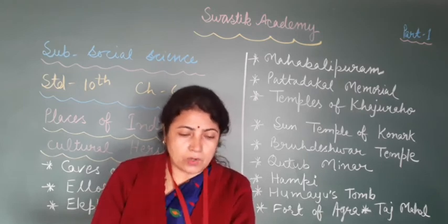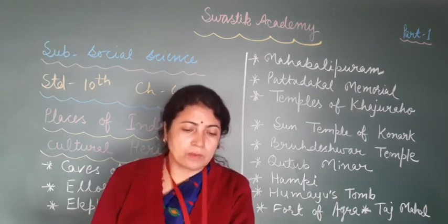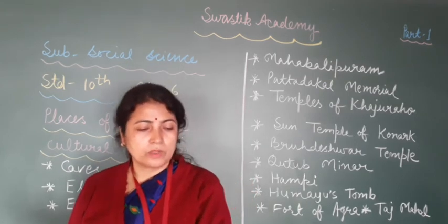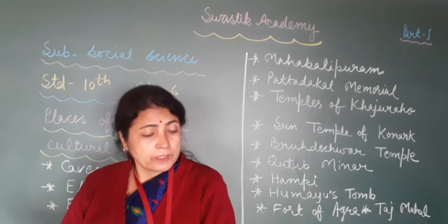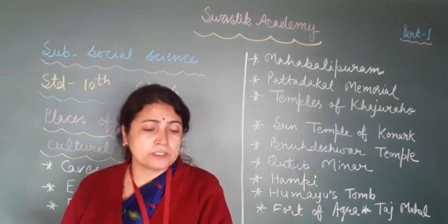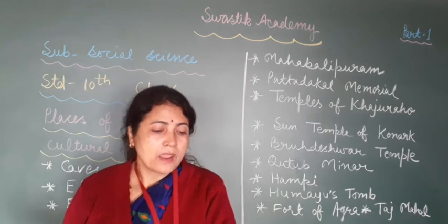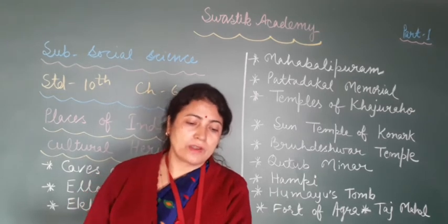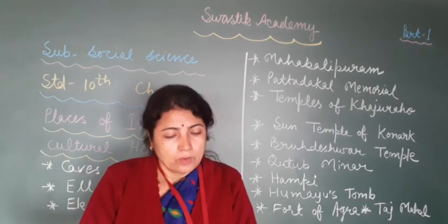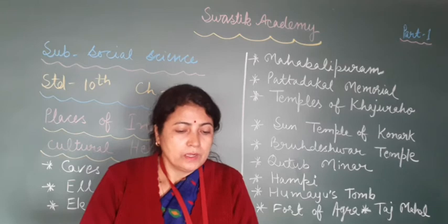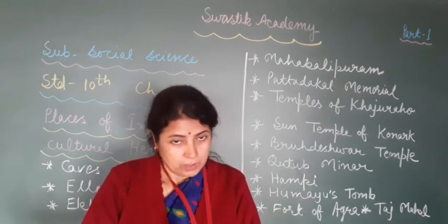The temples of Khajuraho are located in a small village named Khajuraho at Chhatarpur district of Madhya Pradesh. Khajuraho was the ancient capital city of Chandela Rajputs of Bundelkhand. Temples were built by these kings during their reign from 905 to 1050 AD.